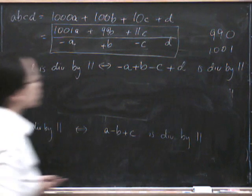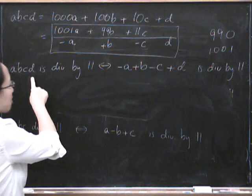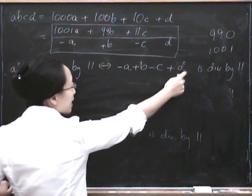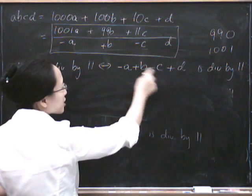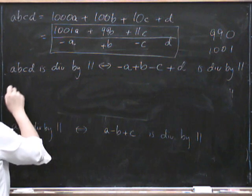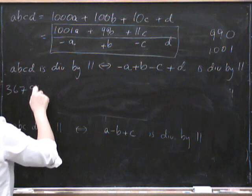So to check divisibility by 11, I hope you can guess what the general answer is. And that is that we've got to not just take a sum of the digits, but a sort of alternating sum. Where we start at the end with a plus and then take a minus and a plus and a minus. So supposing I write down a number, 3, 6, 7, 9, 1, 1.